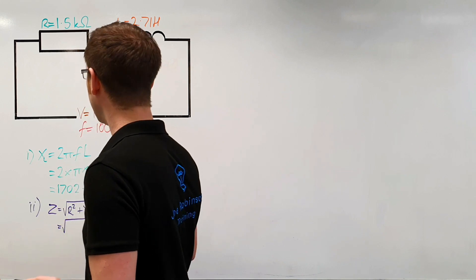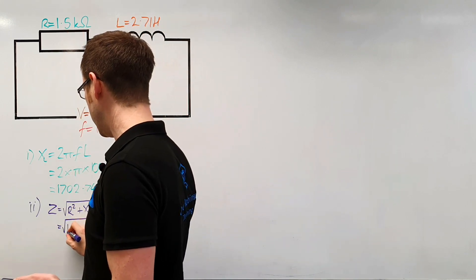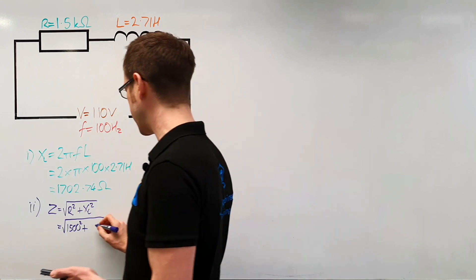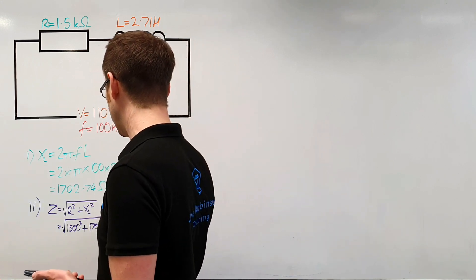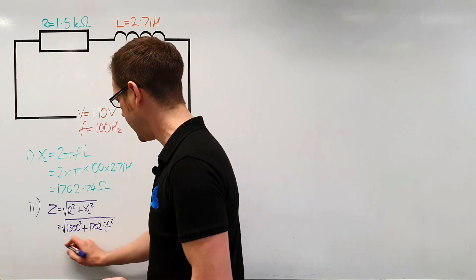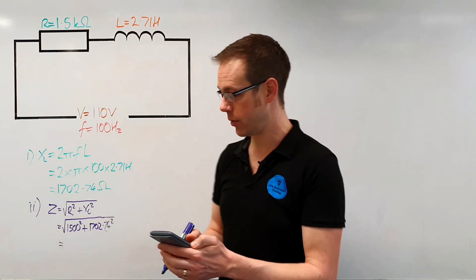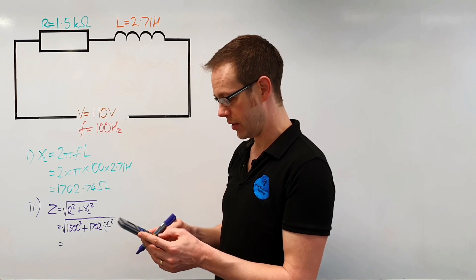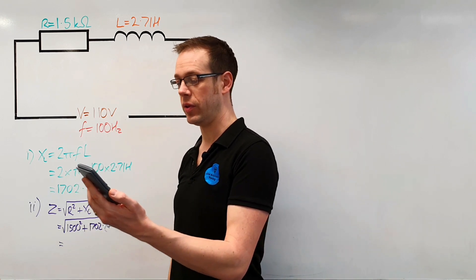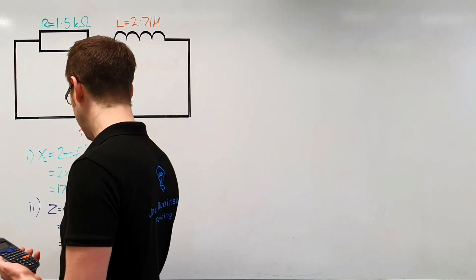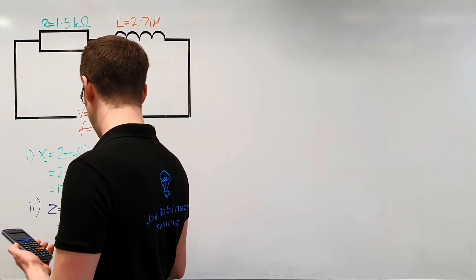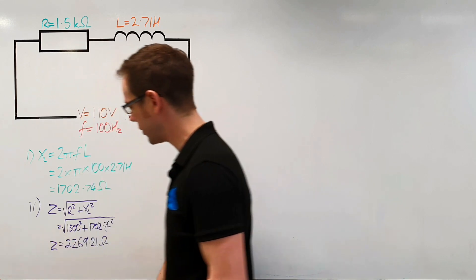We've got the square root of 1.5 kilohms — bearing in mind that is 1,500 ohms — squared, added to the value for XL that we just calculated, 1,702.74, also squared. If we put that into the calculator, we get the square root of 1,500 squared plus 1,702.74 squared, and that gives us a total answer of 2,269.21 ohms. So that is the total impedance for this circuit.